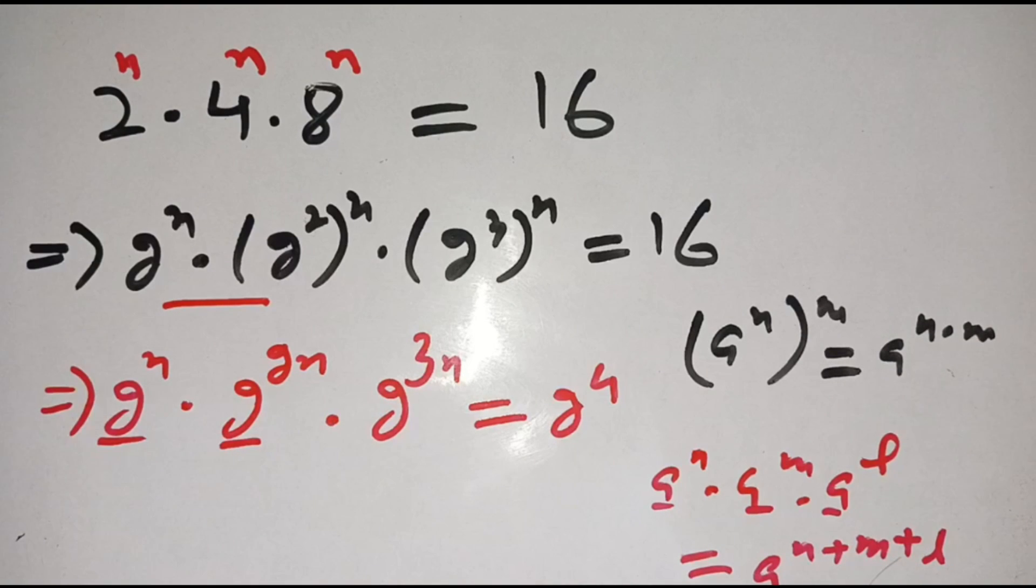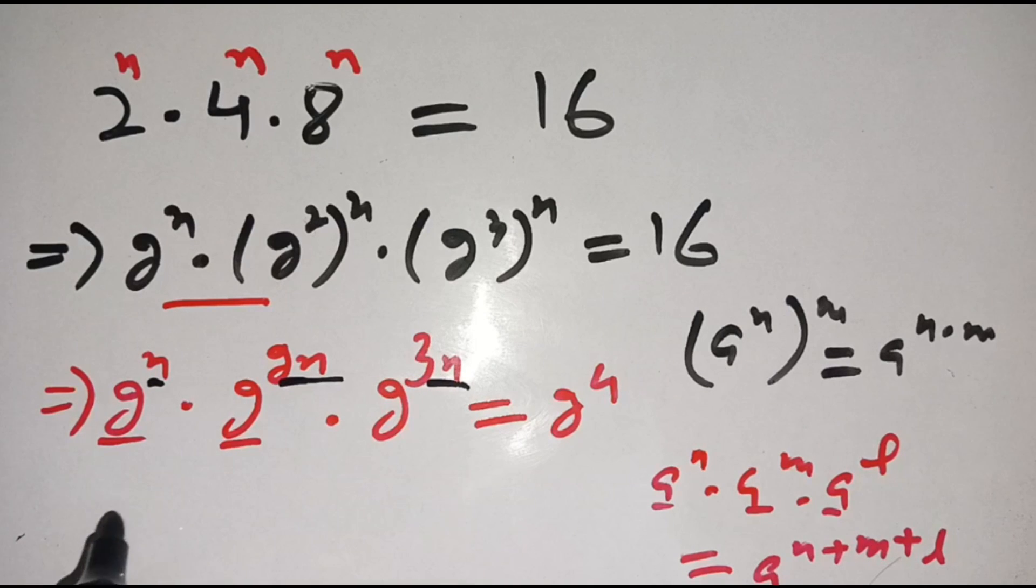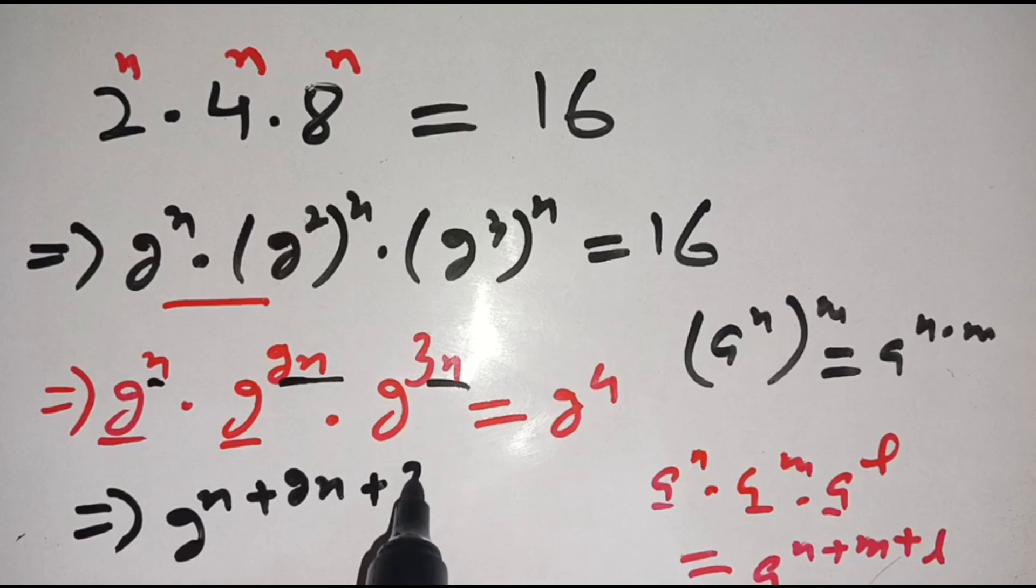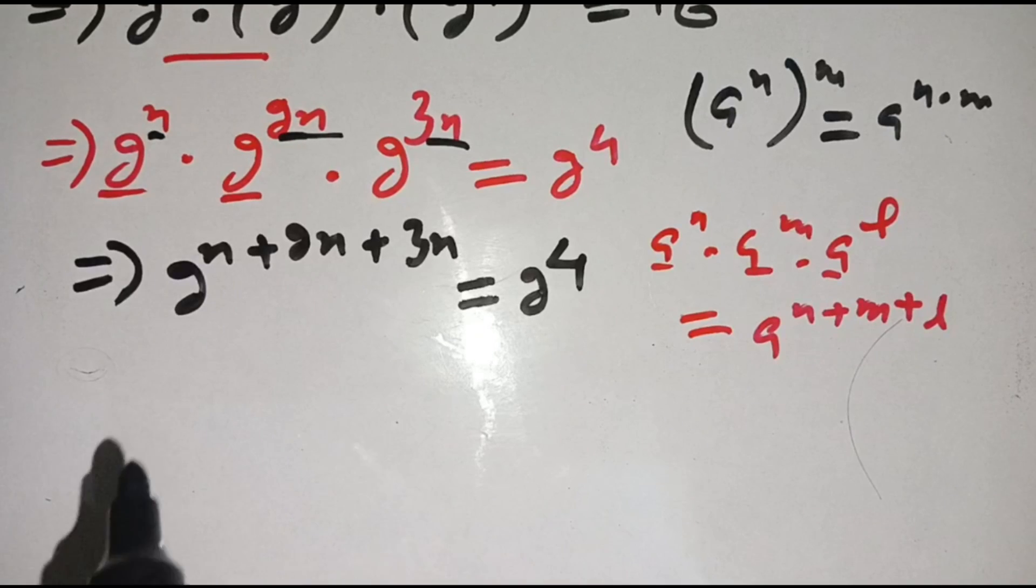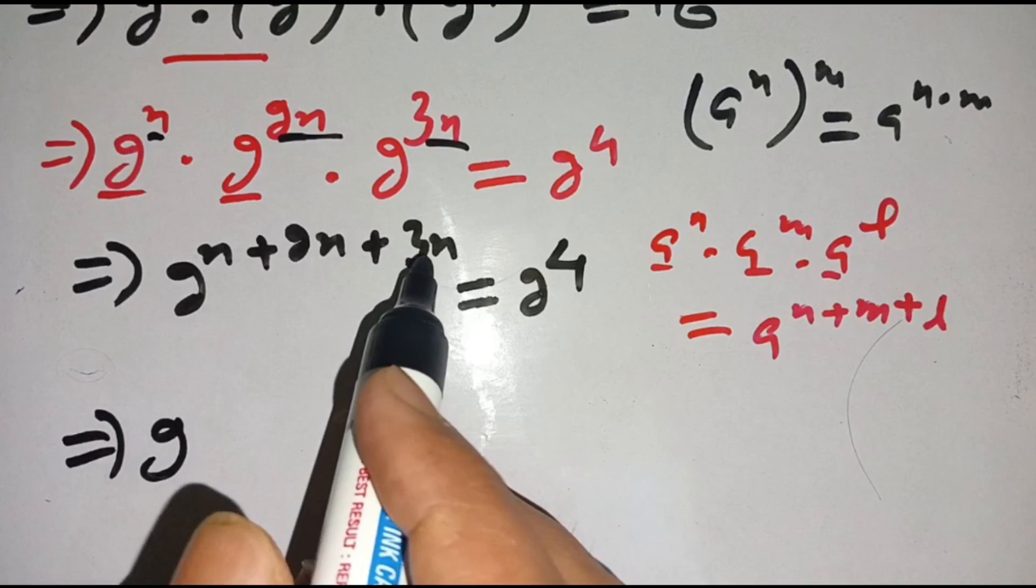2^(n+2n+3n) is equal to 2^4. Now on the next step we can write as 2^(n+2n+3n), which becomes 2^(6n) is equal to 2^4.